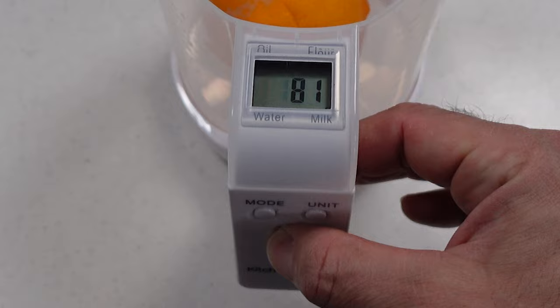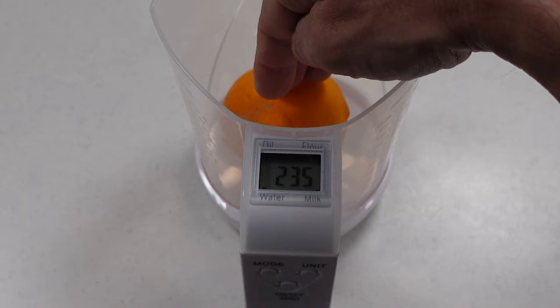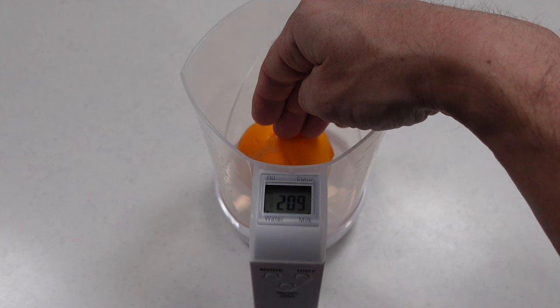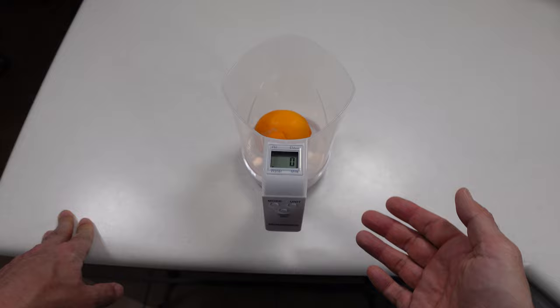At this point we can add more ingredients and that would actually subtract out the weight of the lemon and it would only take into account the additional stuff that you put in there. You could do that multiple times and that way you'd save a little bit of time because you can just keep throwing stuff in there, resetting and going once again instead of having to take everything out each time.